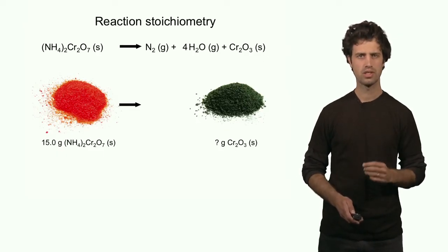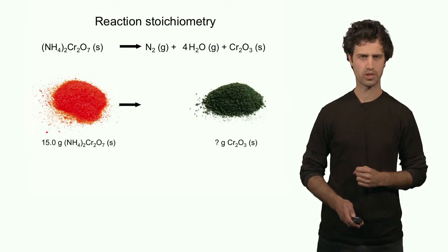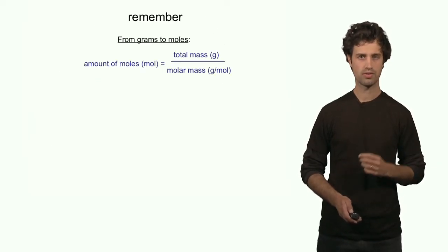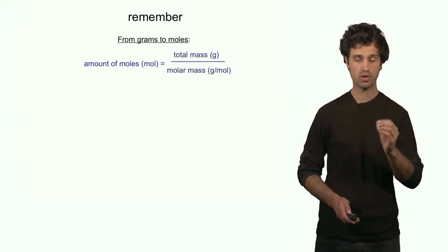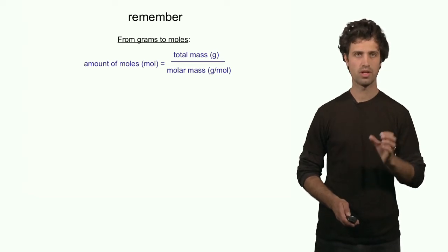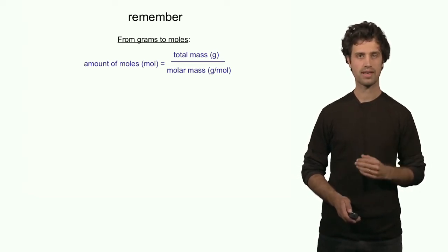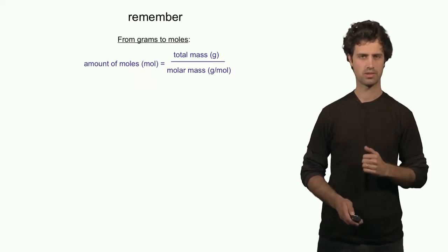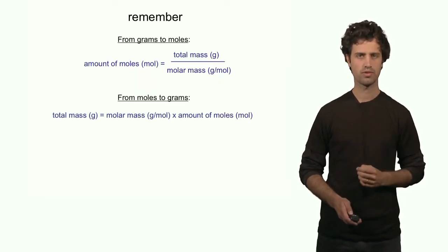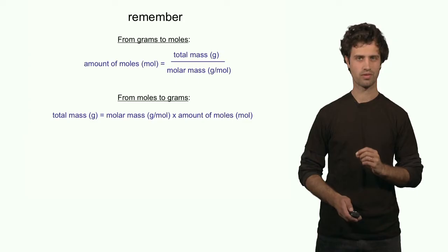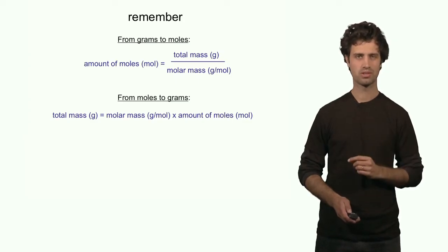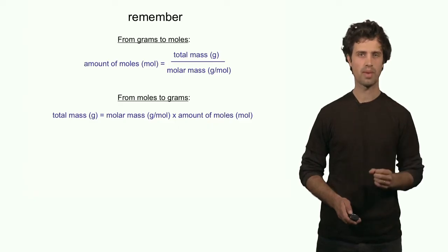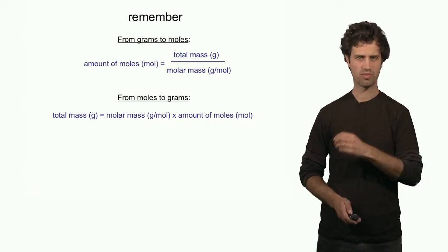In these calculations, several conversions will be very important. The first important conversion is from grams to moles. The number of moles is defined as the total mass of a compound divided by its molar mass. Another important conversion is the reverse: from moles to grams. The total amount of grams of a compound is the molar mass times the number of moles.